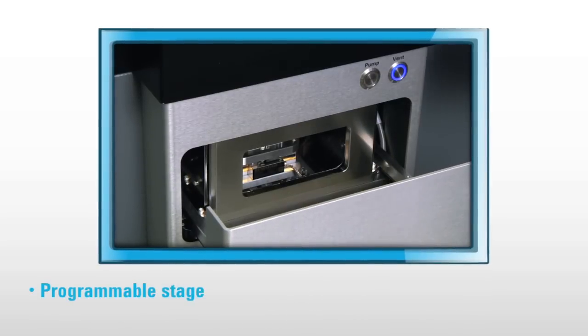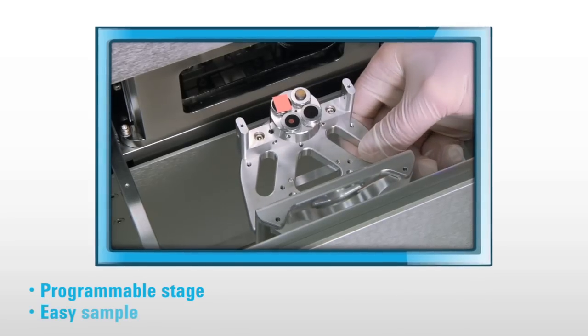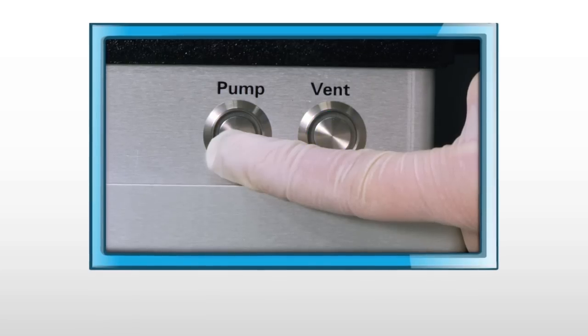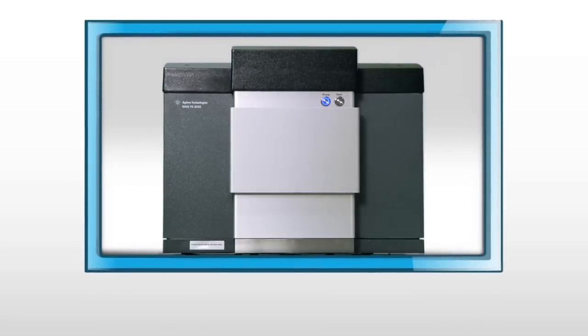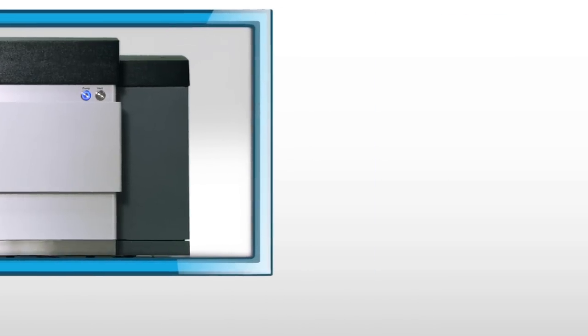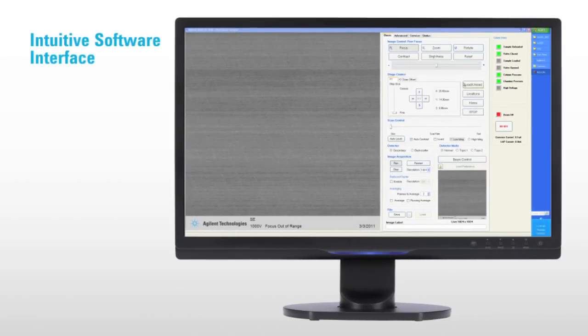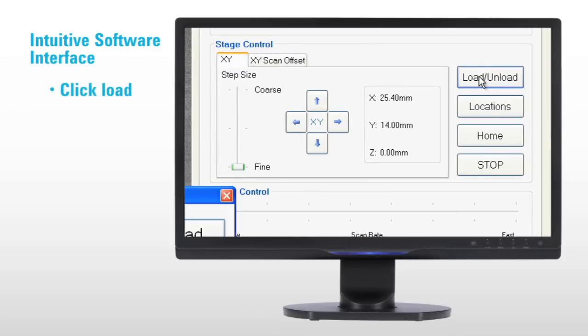The programmable stage allows you to easily find regions of interest on the sample or move between samples if multiple samples are loaded into the instrument. It allows you to set and store precise coordinates for areas of interest.